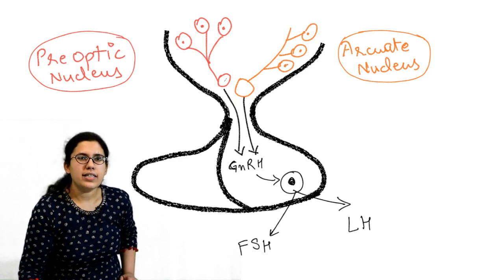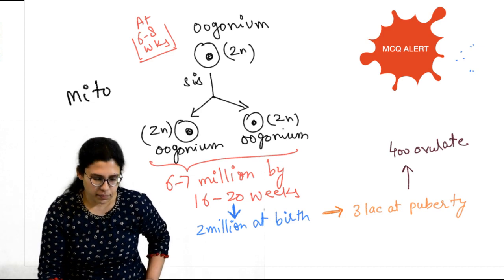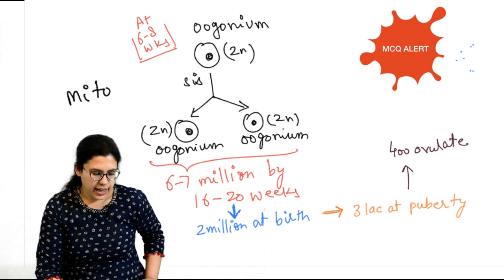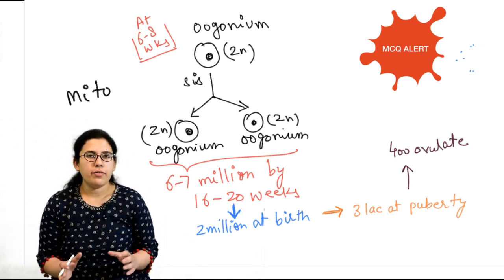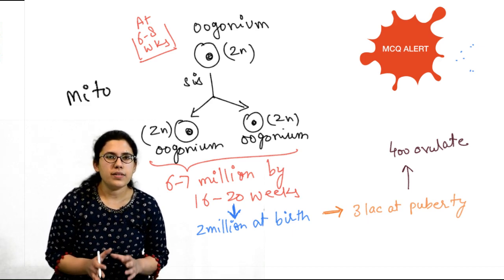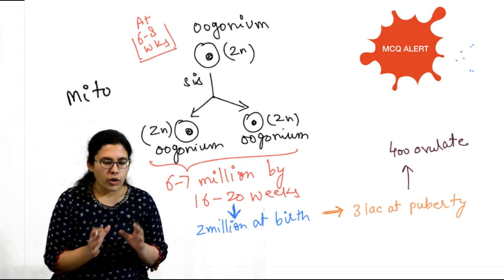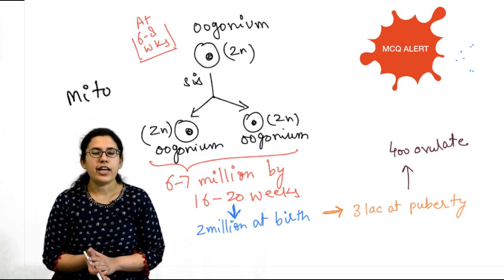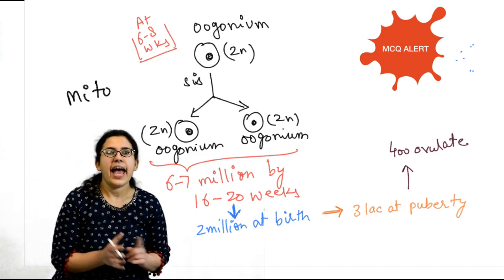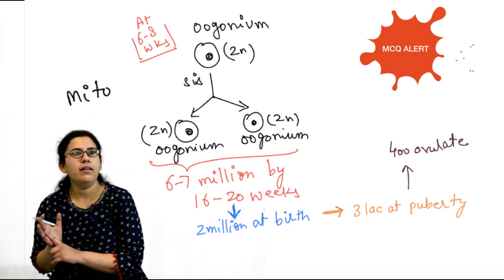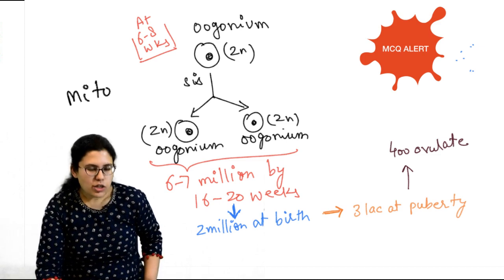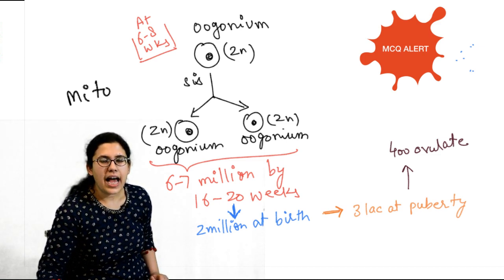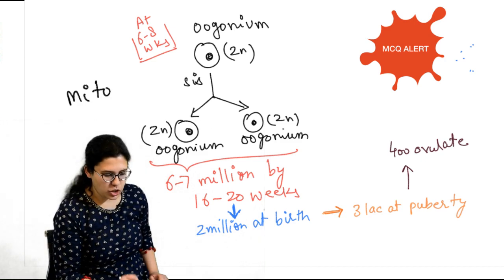Before we discuss the ovarian cycle, we need a quick discussion on something important. In the female fetus, there are several germ cells called oogonia. Germ cells are cells which give rise to eggs in the female fetus and sperm in the male fetus. These oogonia start their mitosis at 6 to 8 weeks of gestation — this is a very important MCQ point.